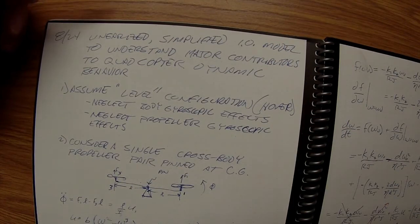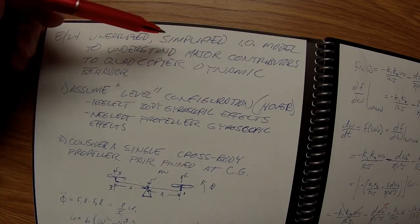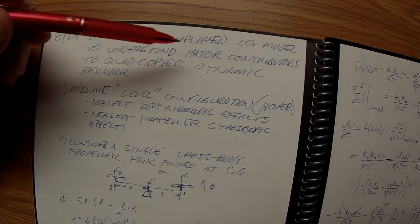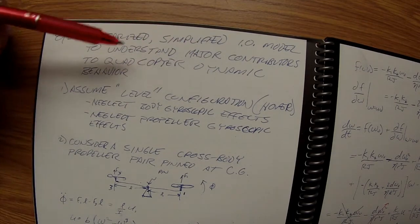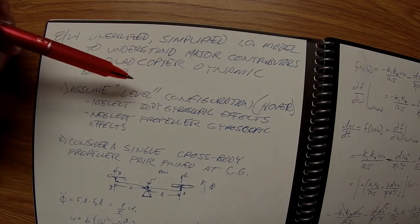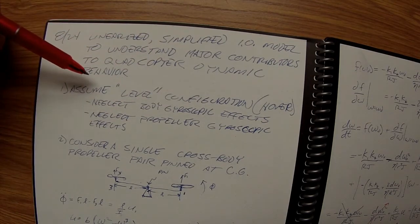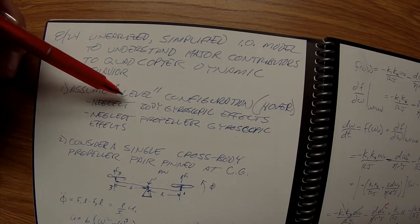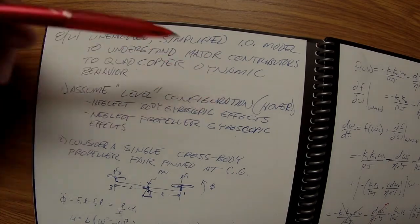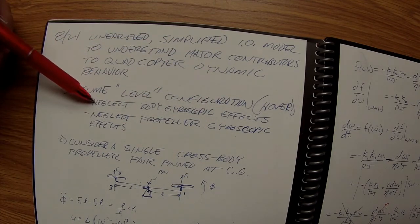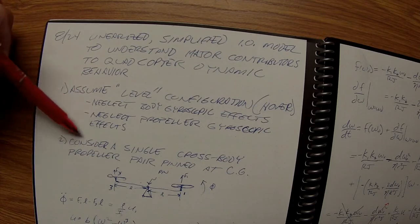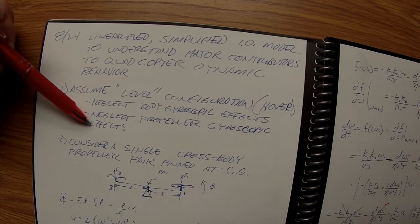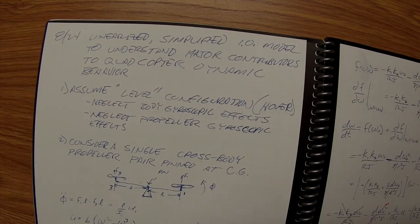We're going to look at a linearized, simplified input-output model so we can understand the major contributors to the dynamic behavior when we design the control system. In order to do that, we assume a level configuration and hover.